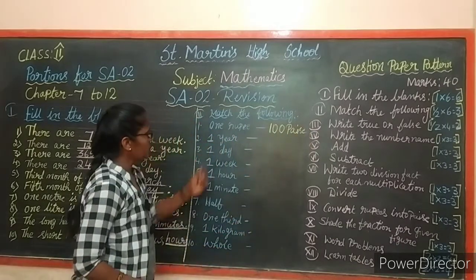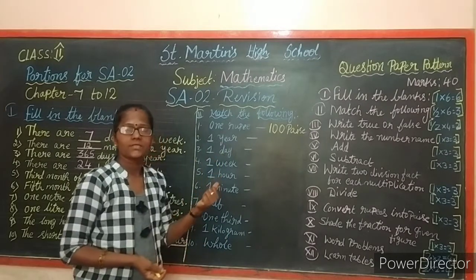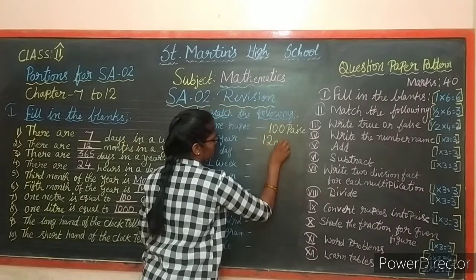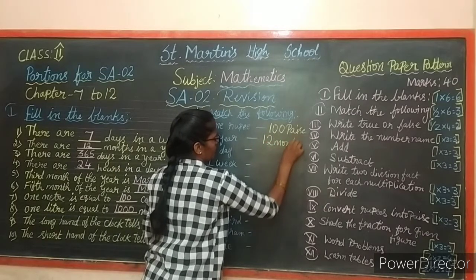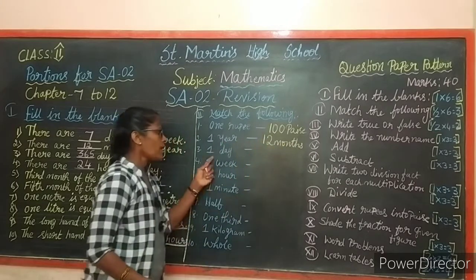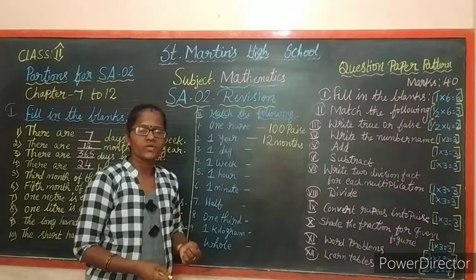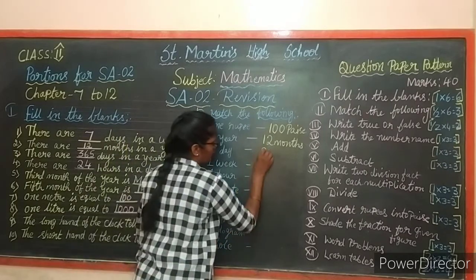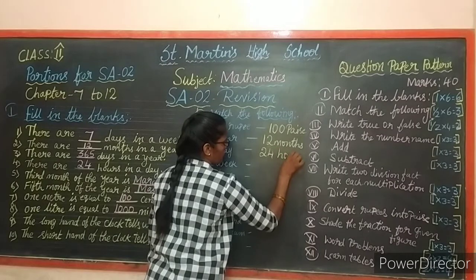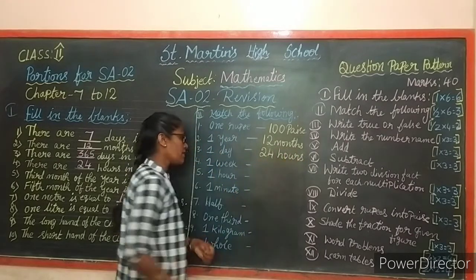Next: 1 year contains how many months? 12 months. 1 year equals 12 months. Next: 1 day has how many hours? 24 hours. 1 day equals 24 hours. Next: 1 week has how many days? 7 days. 1 week equals 7 days.